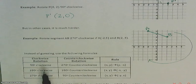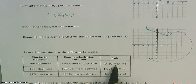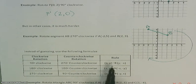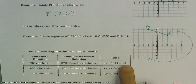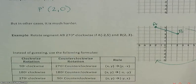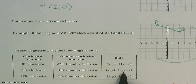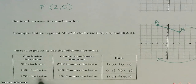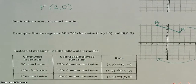For 90 degrees clockwise — which is the same as 270 degrees counterclockwise — you take X and Y, flip them, and make the first one opposite: (Y, −X). The 180-degree rule is to change the sign of both. The 270-degree clockwise rule is flip and make the Y opposite: (−Y, X).